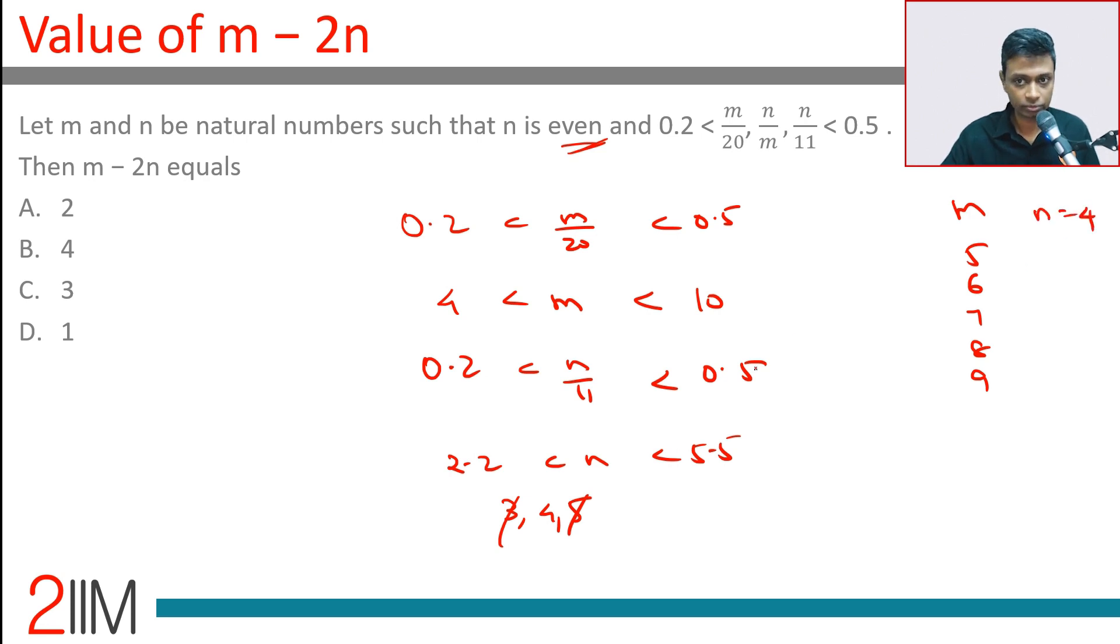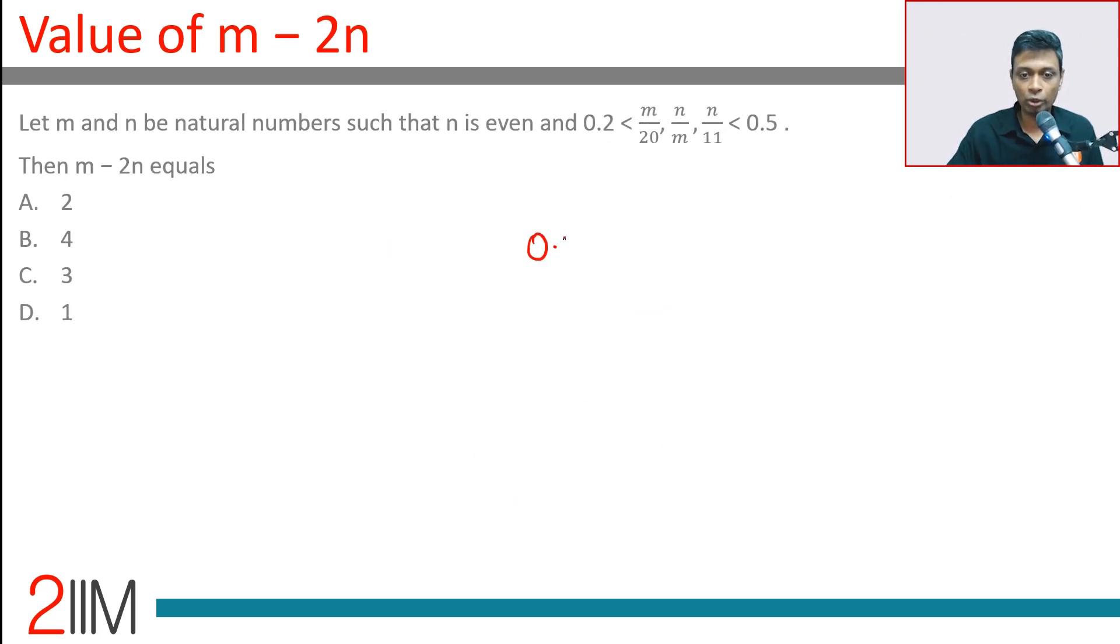Fine, life is even simpler. Now let's go to the third part: 0.2 < n/m < 0.5. N is 4, we know that. So 0.2 < 4/m < 0.5.